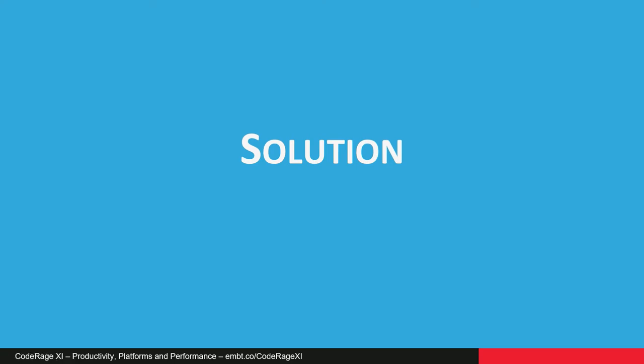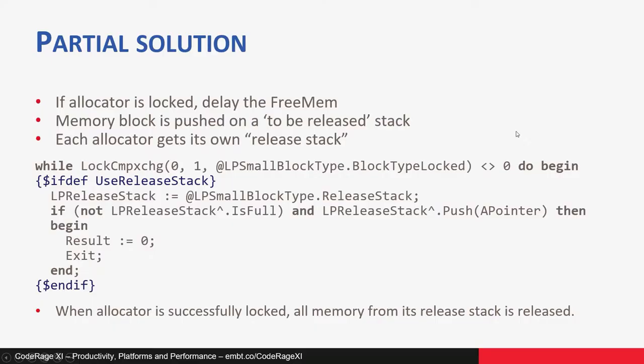So besides fixing each and every multi-threaded program to use fewer memory allocations, is there something else we can do? Is there a golden bullet that will speed up existing programs? As it turned out, there is. The solution is, in a general idea, quite simple: if we cannot lock the allocator at the moment, then we'll just release memory at some later time. We don't have to release memory at this very moment — nobody forces us to. We'll just put the current address on a to-do list and immediately return.